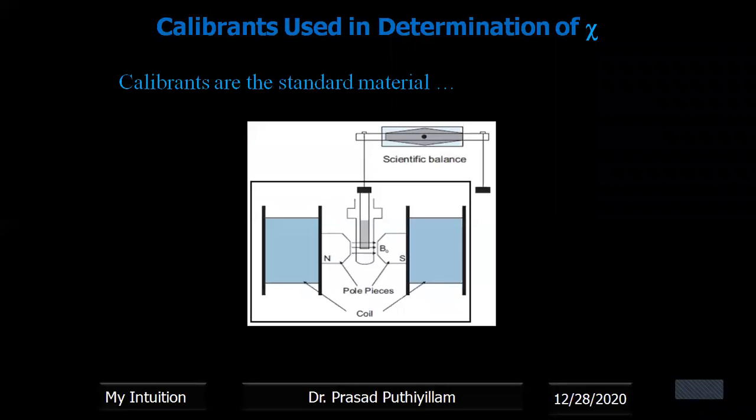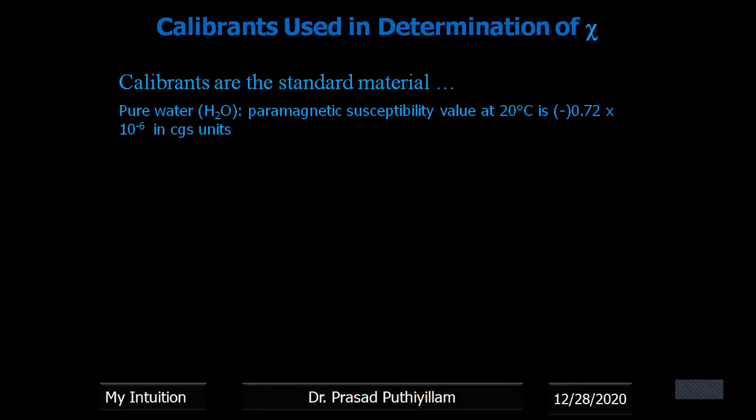So the calibrant used in determination of chi, that is by using, for example, Gauss method - the calibrants are the standard material, they are material which are having a constant value. It will not vary on change of small temperature or any other effects, that value will not be varying. Therefore, we call it as a standard material. So the calibrant used in determination of molecular susceptibility.